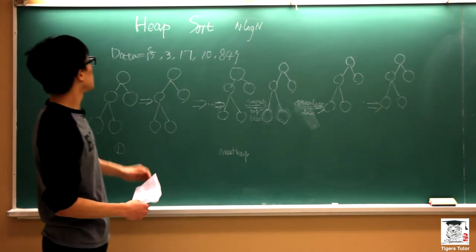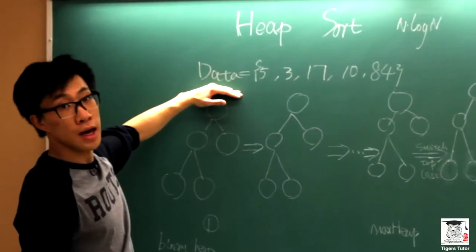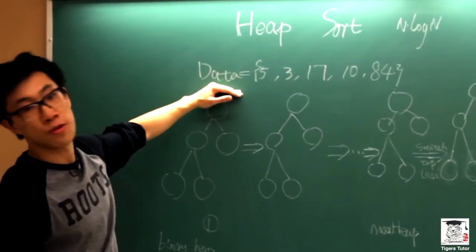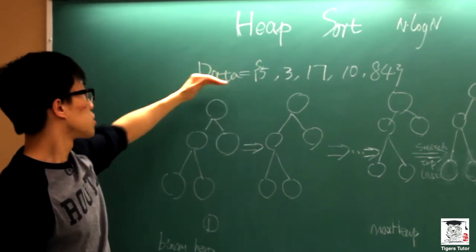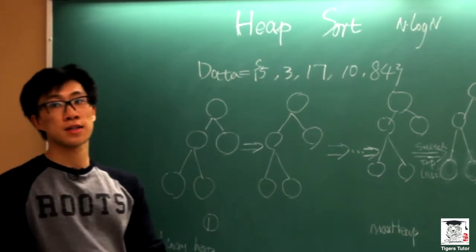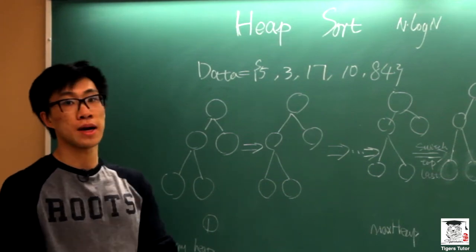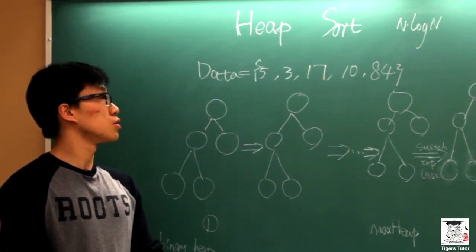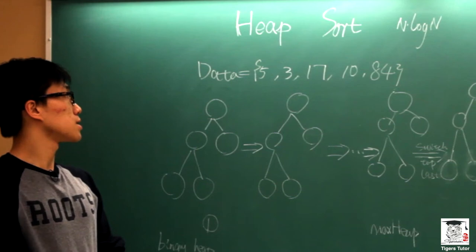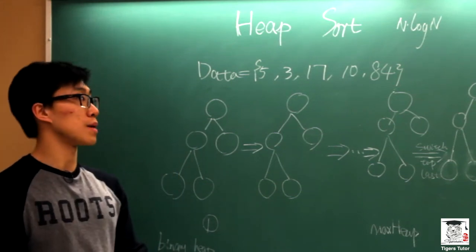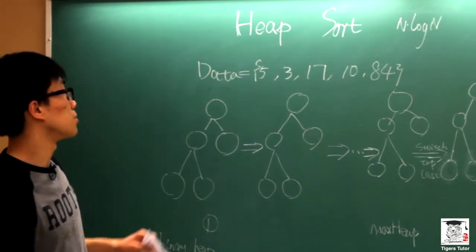So here, as we can see, we are given an array of five elements. Of course, they are not sorted. Based on the fact that we can realize a binary heap by using an array, we can visualize this array into a binary heap. So let me first construct the binary heap.